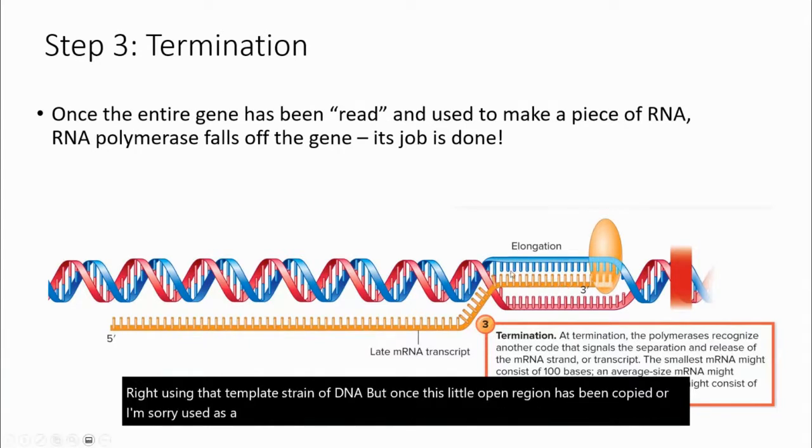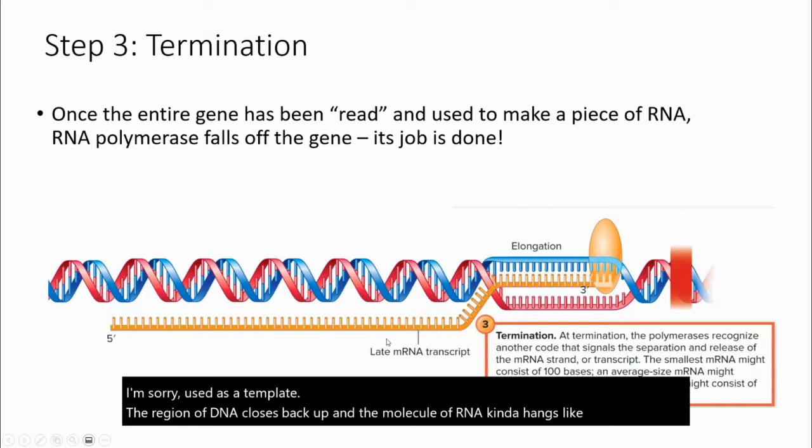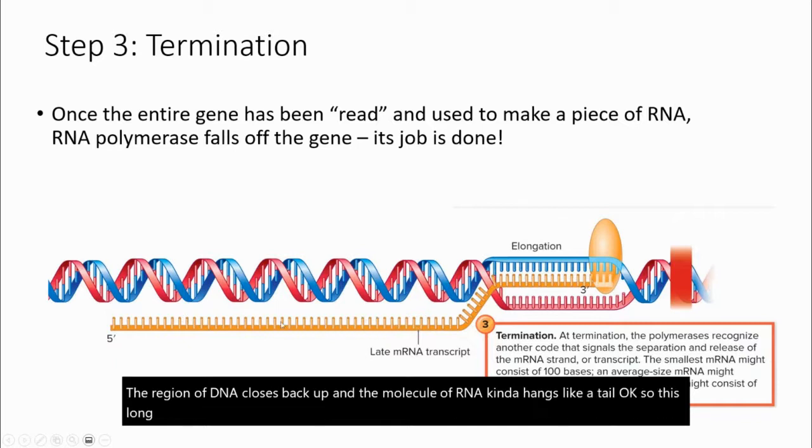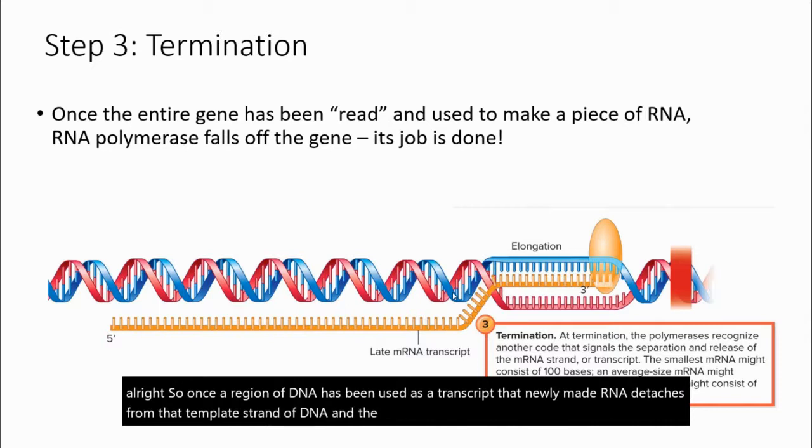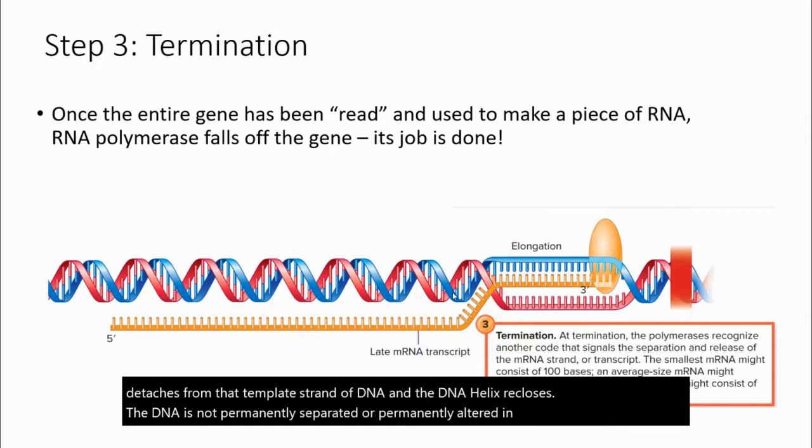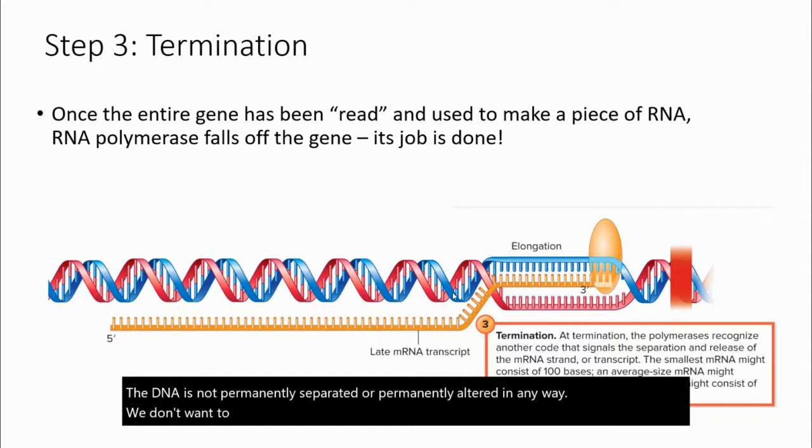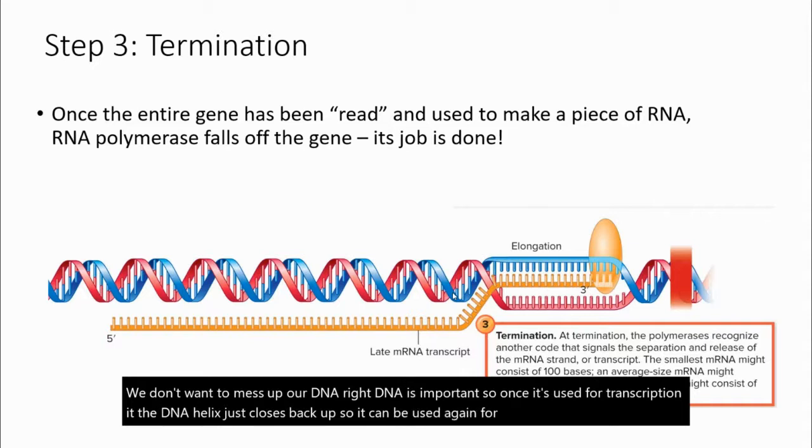But once this little open region has been used as a template, the region of DNA closes back up and the molecule of RNA kind of hangs like a tail. So this long region of RNA that you see here, that came from this piece of DNA, this whole region. So once a region of DNA has been used as a transcript, that newly made RNA detaches from that template strand of DNA and the DNA helix recloses. The DNA is not permanently separated or permanently altered in any way. We don't want to mess up our DNA. DNA is important. So once it's used for transcription, the DNA helix just closes back up so it can be used again for other processes.